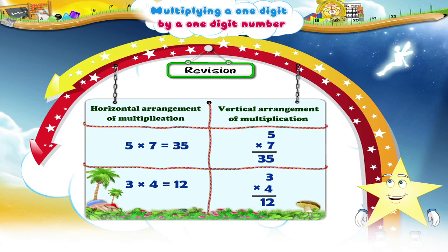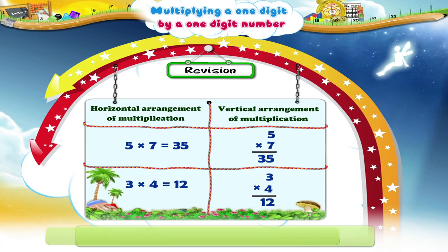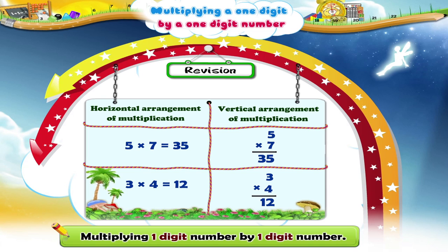Here Starry, both three and four are one-digit numbers. So we have just multiplied a one-digit number by another one-digit number. Let me show you how.